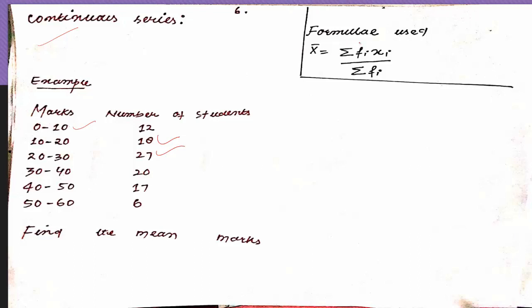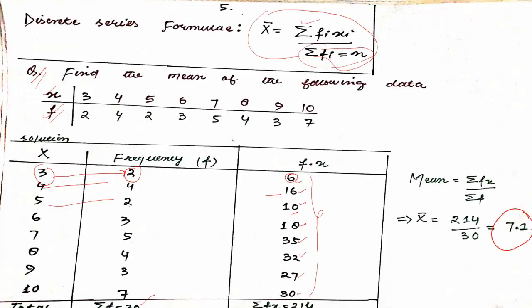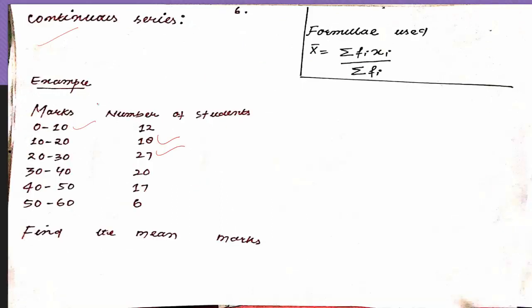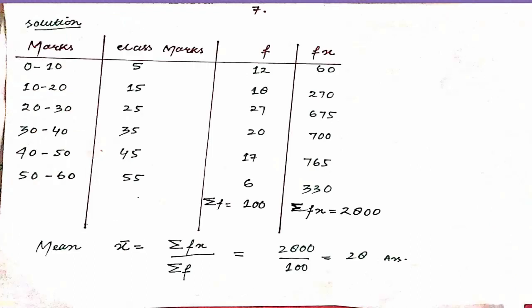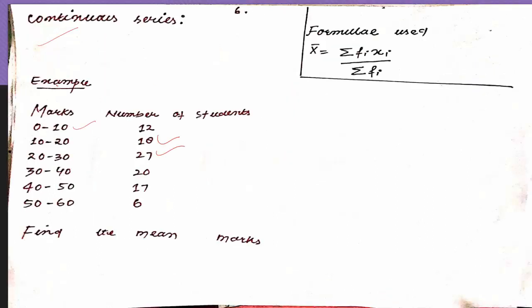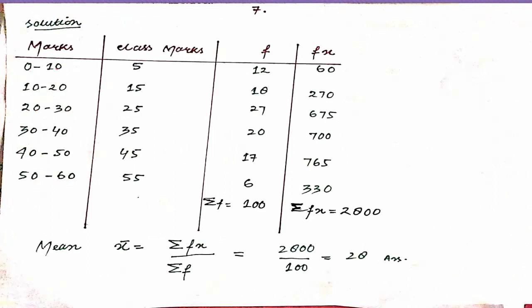The formula is the same as before. But since the question is given in intervals, you first need to calculate the mid-value. For the interval 0 to 10: 0 plus 10 equals 10, divide by 2 equals 5. That becomes your x. For 10 to 20: 20 plus 10 divided by 2 equals 15.